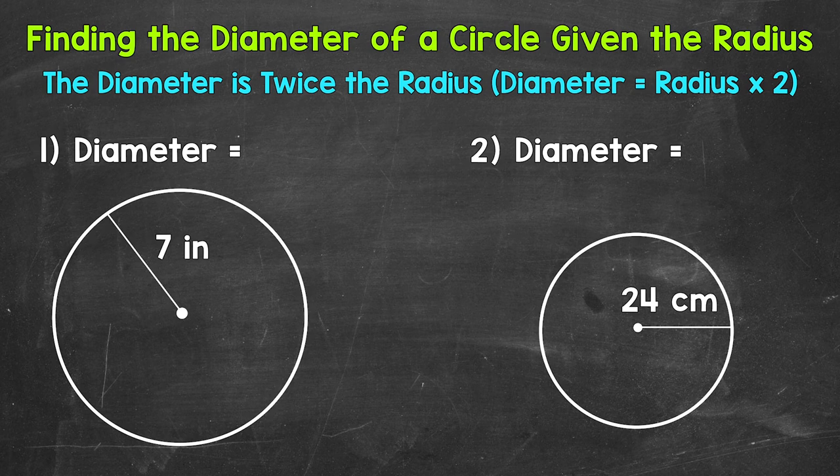To compare, a radius goes from the center to any point on the circle, while a diameter goes all the way across the circle and through the center. This means that a diameter is twice or two times the length of a radius. All we have to do is multiply the given radius by two to get the length of the diameter.